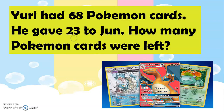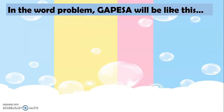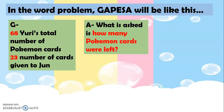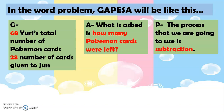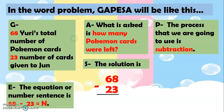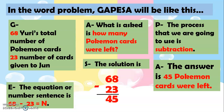Let's have another example. Yuri had 68 Pokemon cards. He gave 23 to June. How many Pokemon cards were left? For G: 68 was Yuri's total number of Pokemon cards, and 23 was the number of cards given to June. For A: how many Pokemon cards were left. For P: subtraction. For E: 68 minus 23 equals N. For S: 8 minus 3 is 5, and 6 minus 2 is 4. The answer is 45 Pokemon cards were left.